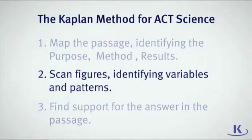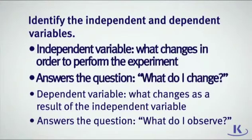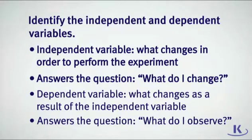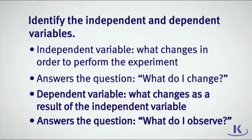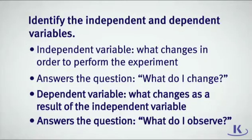Identifying variables is tricky, so here's a way to define them. The independent variable is the variable that is changed in order to perform the experiment. The dependent variable is the variable that changes when the independent variable changes — in other words, the dependent variable depends on the outcome of the independent variable.